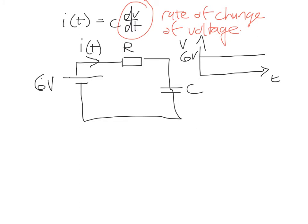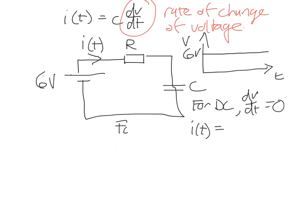And so that produces a very significant result. Namely, that if there's no change in voltage for DC, direct current, DV DT is equal to 0. The voltage doesn't change as a function of time. And so under DC conditions, I of T is equal to C DV DT, which is equal to 0.